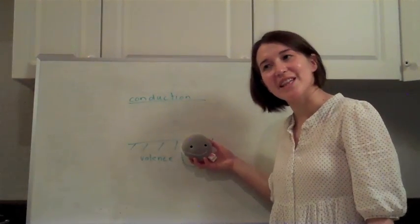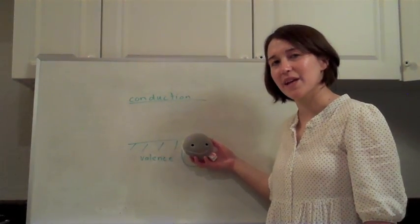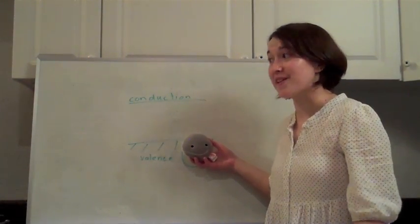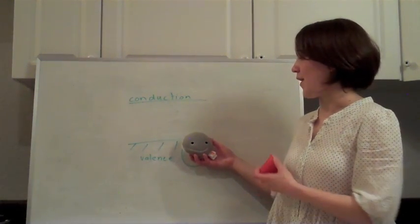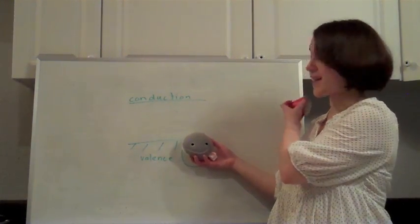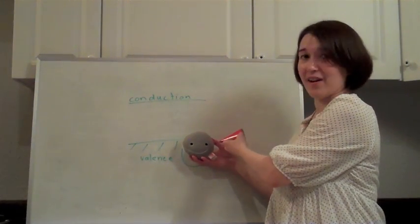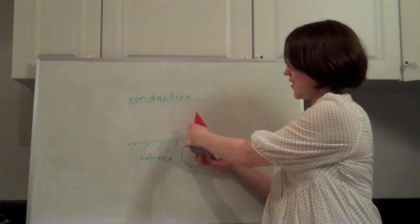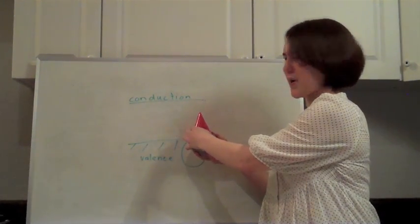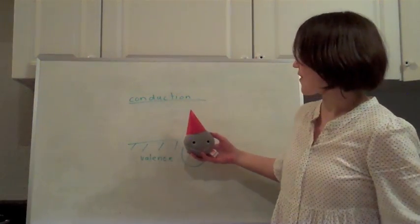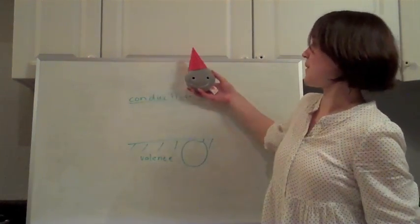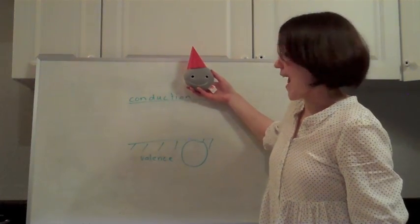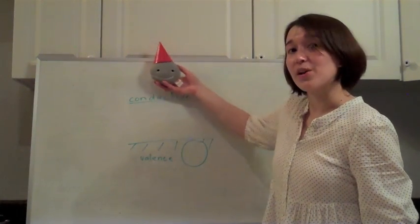So, how does this electron get the energy to go up into the conduction band? One way that we're particularly interested in with photovoltaics is a photon or packet of light hits the electron, gives it enough energy to go out and party in the conduction band. And so, as long as this energy is higher than this band gap, it's able to jump up into the conduction band and move around a little bit more freely.